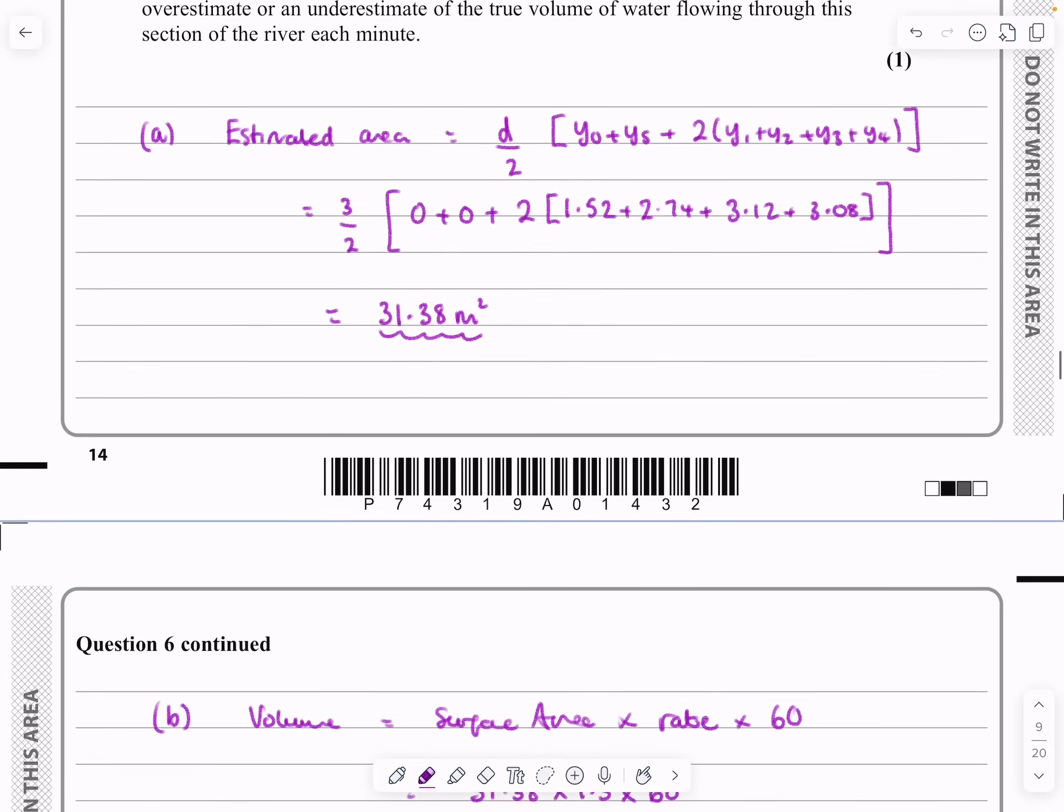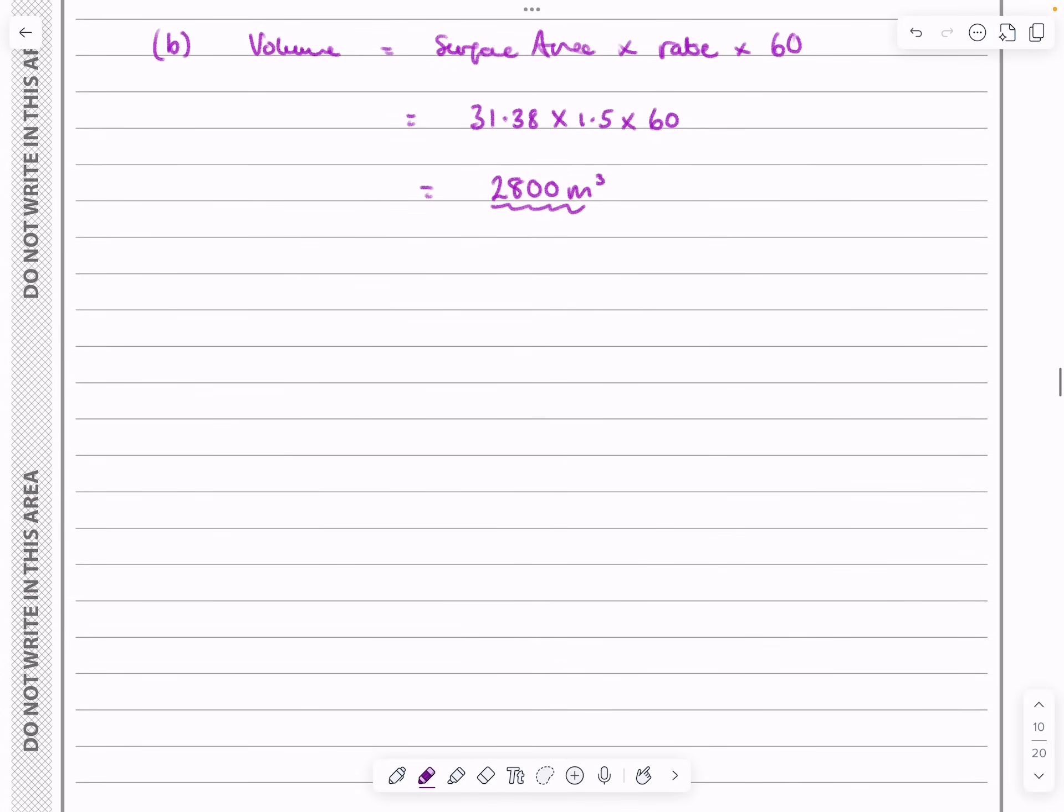But to actually explain that to the examiner, I'll probably use a little bit of a diagram, and just maybe just make it a bit more exaggerated when we're doing it then, that if we had that, and we had that, for example, that we could then say, yeah, shade that bit in.